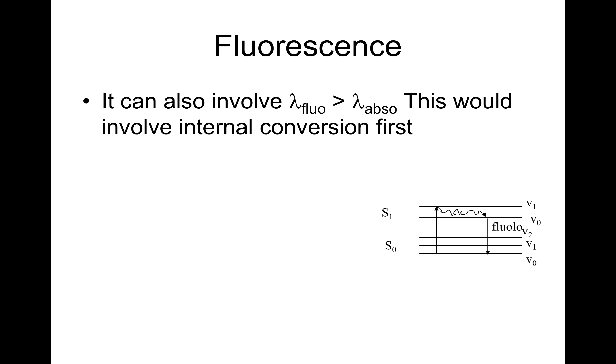It can also involve lambda fluorescence greater than lambda absorbance. This would involve internal conversion first, e.g. absorb in UV and radiating visible. Here is an example: S0, absorption there, then internal conversion to that, then get back to that.